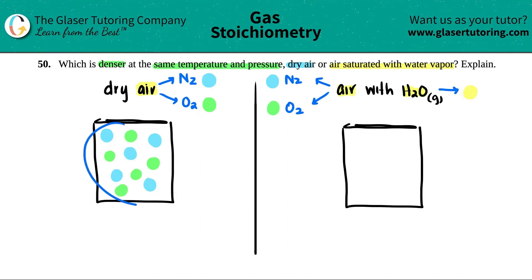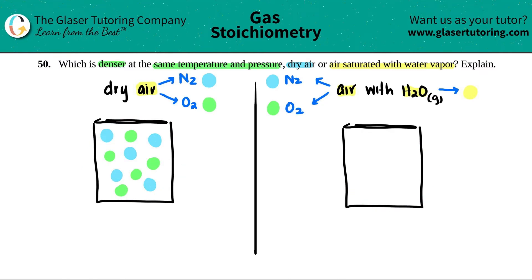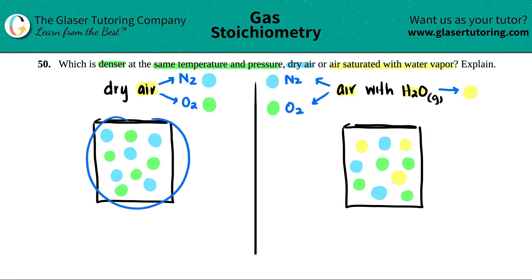The same number of moles must be in the other container — I drew 10 circles total, five and five. So if we add H₂O yellow circles, say three of them, we have to drop some N₂ or O₂ circles to keep the total at 10. The idea is that you are increasing H₂O while dropping your N₂ and O₂.